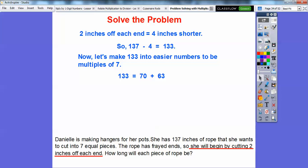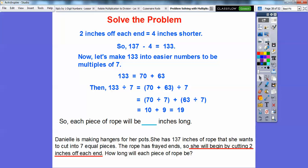We're going to break 133 into easier numbers that are multiples of seven. 133 equals 70 plus 63, where 70 is seven times ten and 63 is seven times nine. When I divide this by seven, I can divide these two numbers by seven and add them together. So 70 divided by seven plus 63 divided by seven is 10 plus nine or 19. Each piece of rope is going to be 19 inches long. Pretty cool, huh? Break those big numbers down.